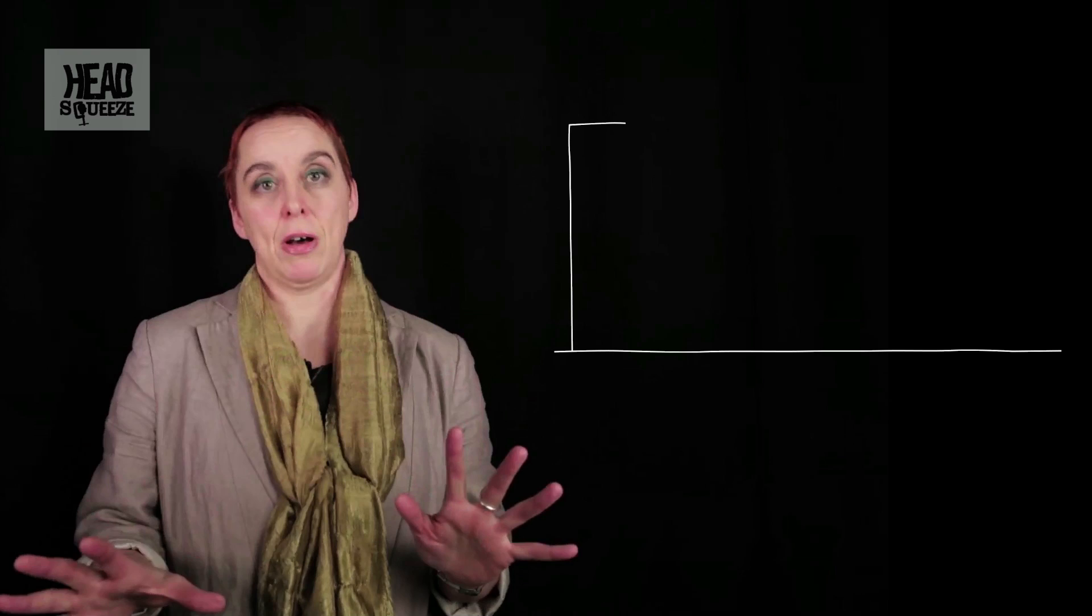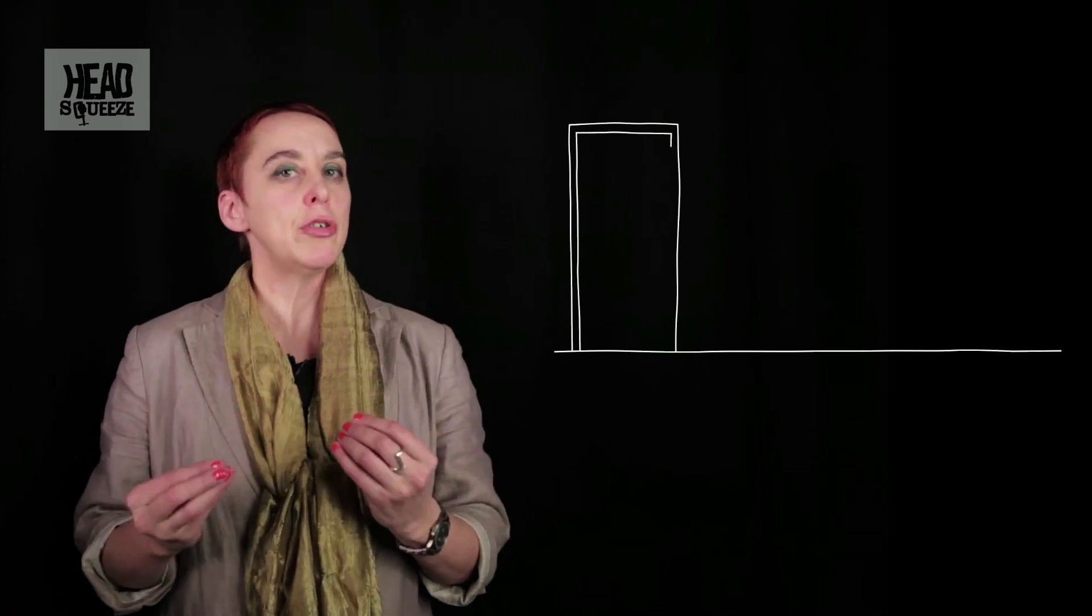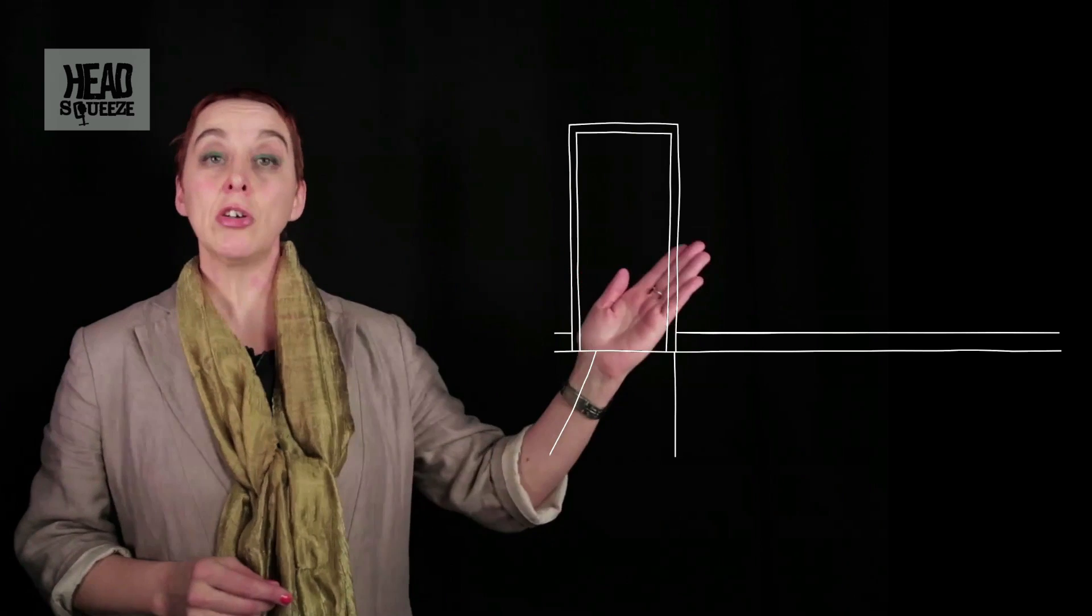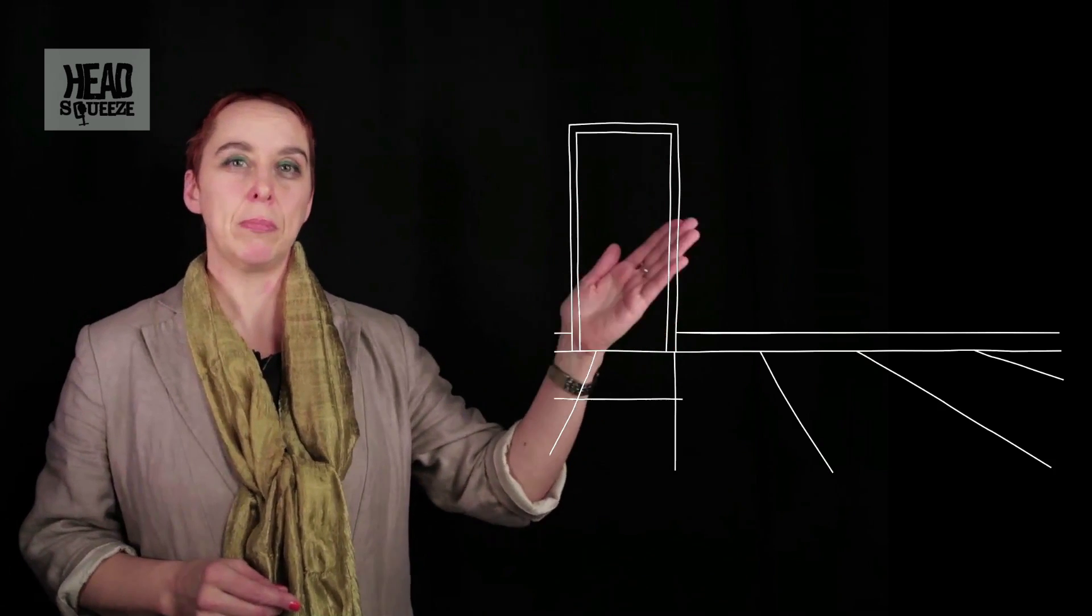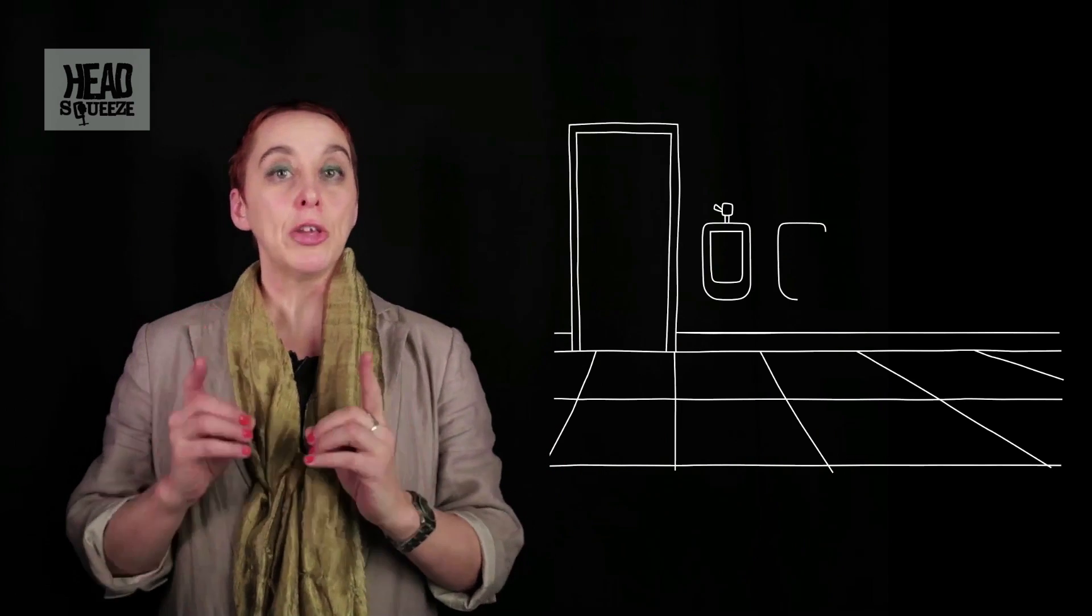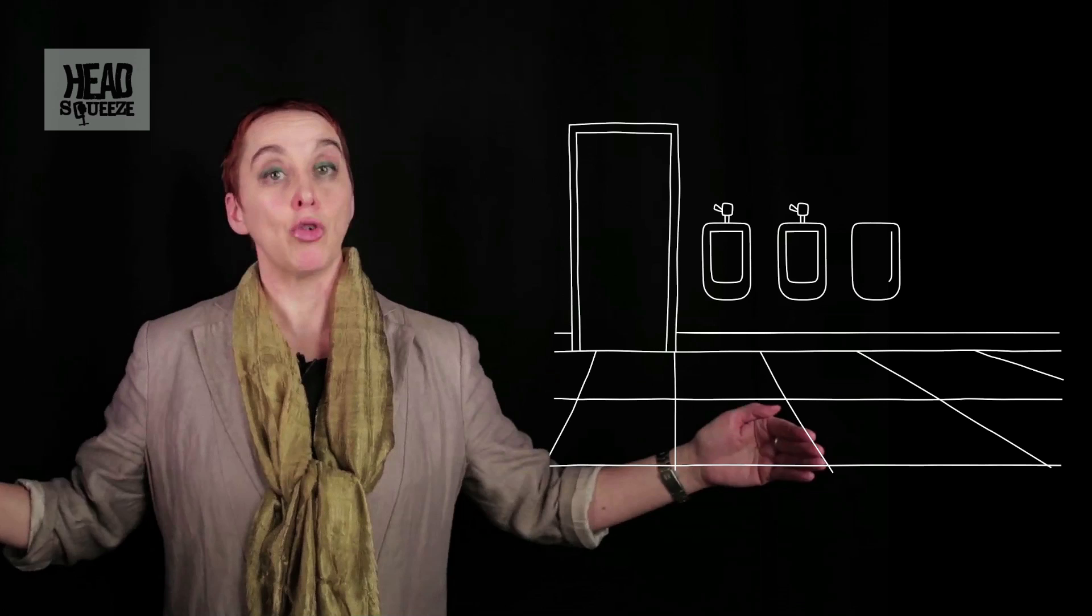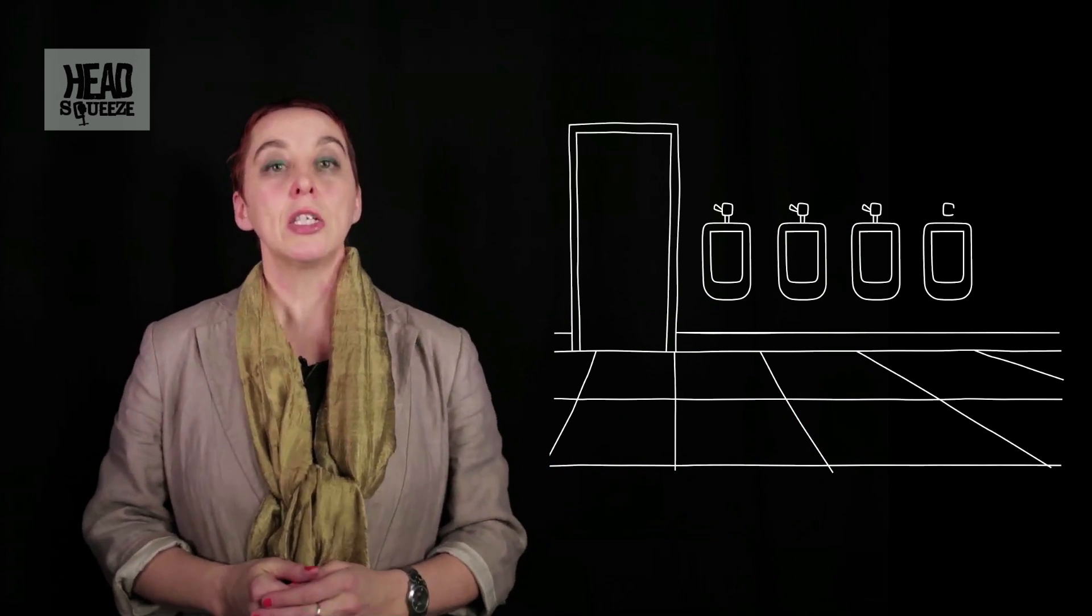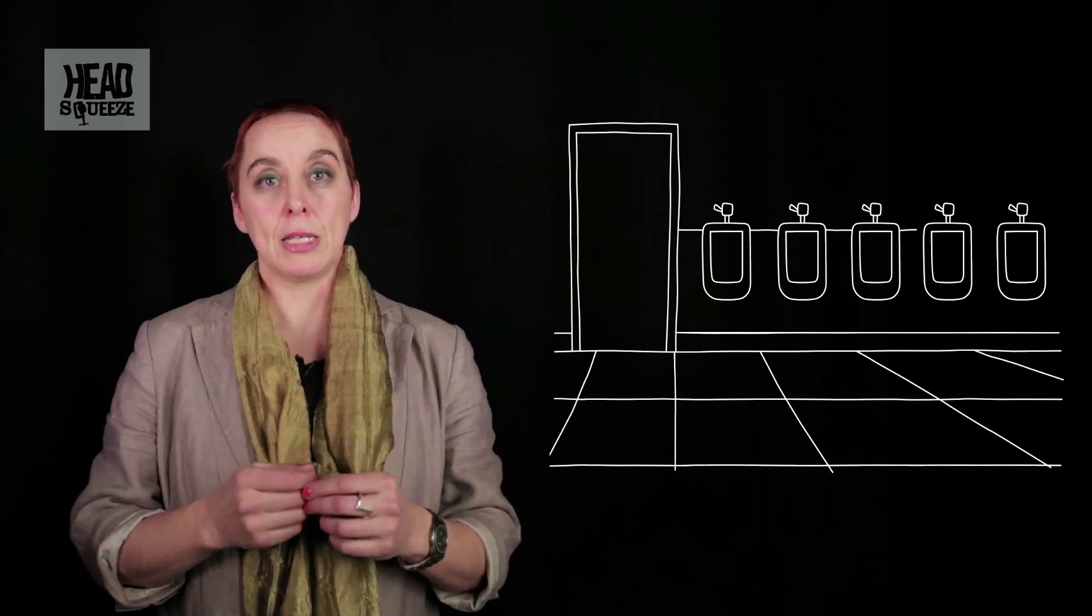So they've already simplified things. When you go and choose a urinal you may be thinking I don't want to stand next to that puddle or I want to look out of that window at the lovely view of the beer garden. But they've eliminated all that. All they're interested in is are you going to be standing next to somebody else or not? How can you minimize that? So already we've got a simplified scenario.